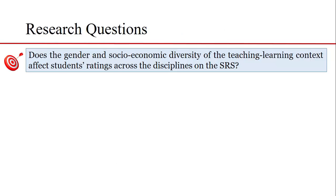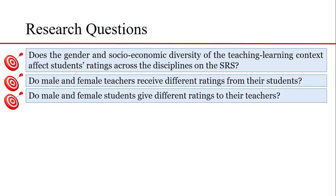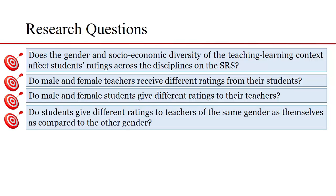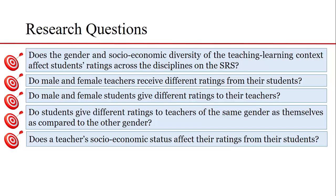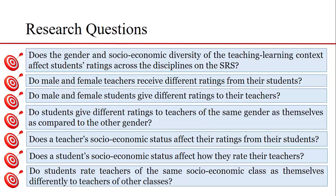Now the research questions. There are seven research questions for this study. Does the gender and socioeconomic diversity of the teaching-learning context affect students' ratings across disciplines on the SRS? Do male and female teachers receive different ratings from their students? Do male and female students give different ratings to their teachers? Do students give different ratings to teachers of the same gender as themselves compared to the other gender? Does a teacher's socioeconomic status affect their ratings from students? Does a student's socioeconomic status affect how they rate their teachers? And finally, do students rate teachers of the same socioeconomic status class as themselves differently to teachers of other classes?